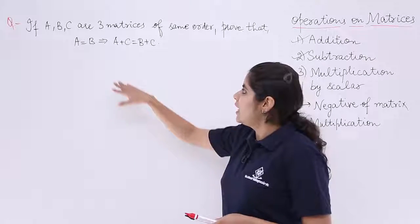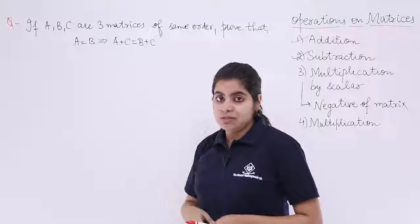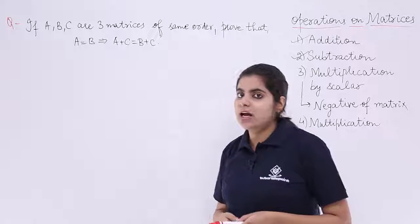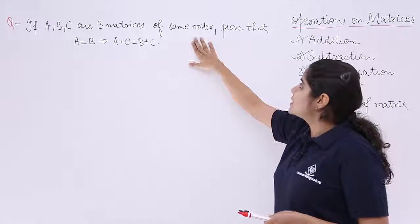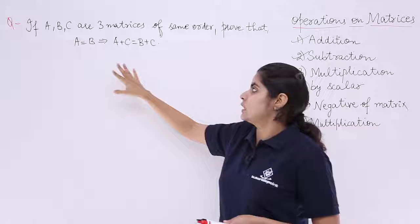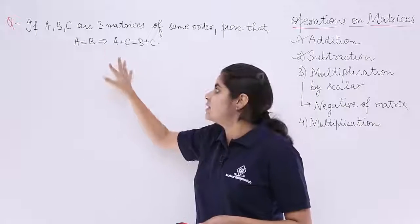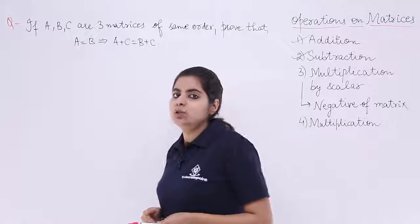The question says that if A, B, C are three matrices of the same order, prove that A equals B implies A plus C equals B plus C.